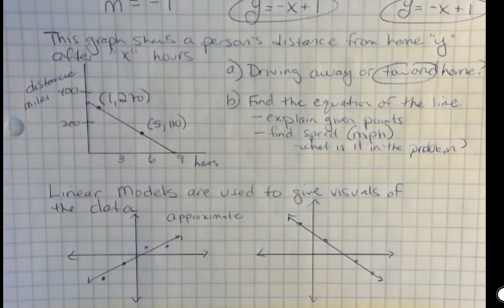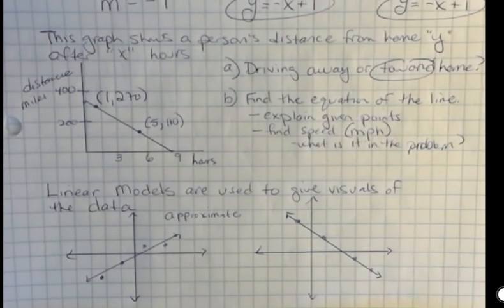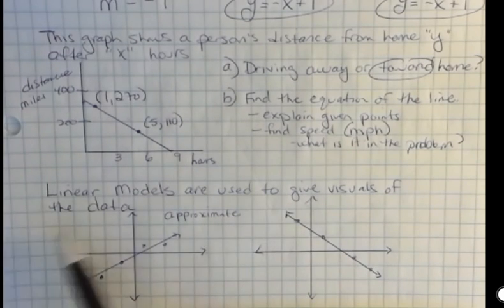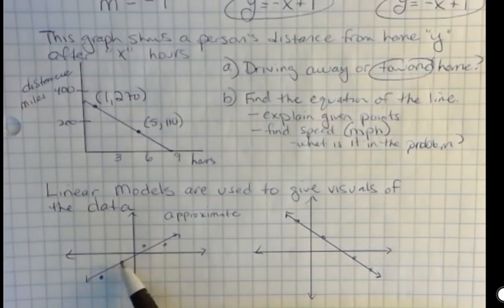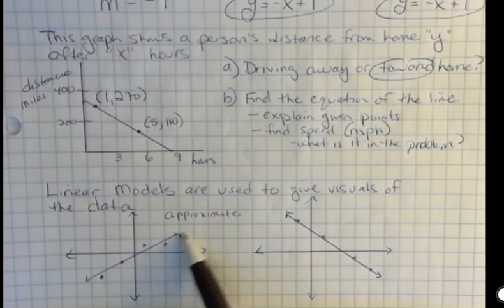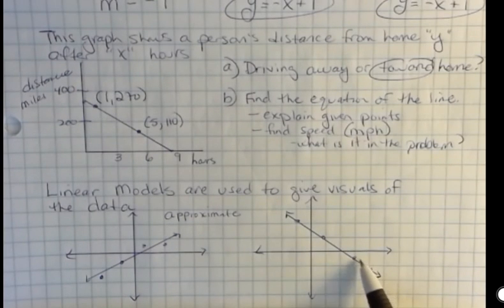When you talk about linear models, that's linear equations are equations that form lines, and we use those to give visuals of data. Sometimes if we were to plot points, we could get something like this, where the points don't actually match up, then we say that's an approximation or approximate.